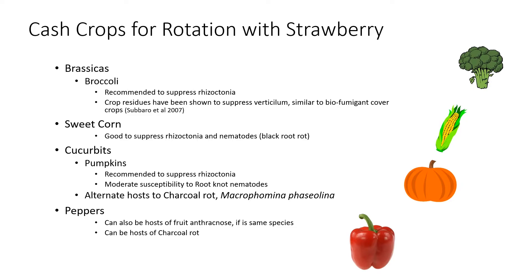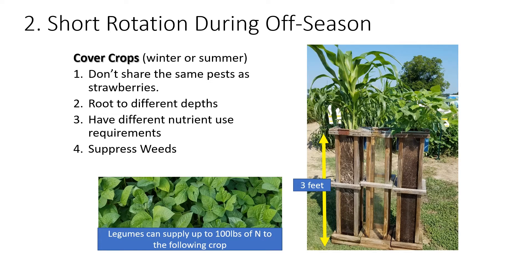Crops you could go directly into following a strawberry crop — reusing that plastic — include sweet corn, pumpkins, and peppers. Pumpkins work especially well because the timing of establishment follows naturally when the strawberry crop finishes. However, while pumpkins have been shown to help suppress Rhizoctonia in some cases, they can be moderately susceptible to root-knot nematodes and can be an alternate host to charcoal rot. Charcoal rot tends to be a bigger problem in California, but if we have issues with those two pests, pumpkins might not be a good option.